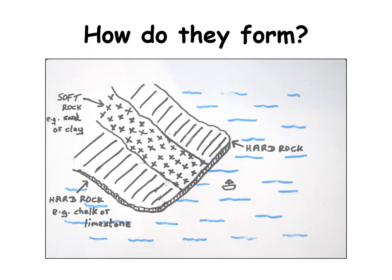Here is an image. This area is the land and this area is the sea. Imagine we've got a band of hard rock — that could be chalk or limestone — on either side, and in the middle there's a band of soft rock that could be sand or clay.